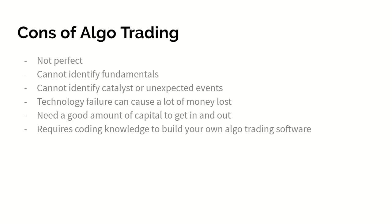Think of it this way: you can program algo trading to automatically execute a trade when the price gets to a certain place. So in the case of a bad event, if the stock drops too low, the trade executes and you sell out of your position. But what if by the end of the day, Jack Dorsey comes back out and gives a speech, and now the stock goes back up by $10? There's a lot of things catalyst-wise that cannot be predicted. Also, it requires a lot of capital because these trades execute so often and so quickly — you're buying and selling with a wait time for your funds to settle. Finally, it requires a lot of coding knowledge to build your own trading software that caters to your needs.